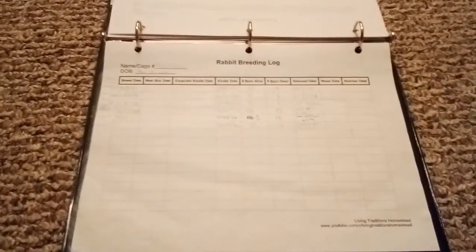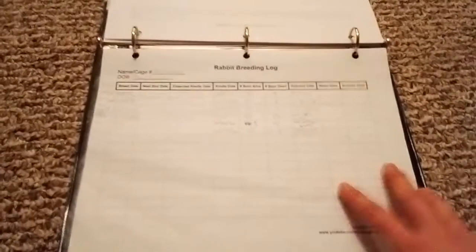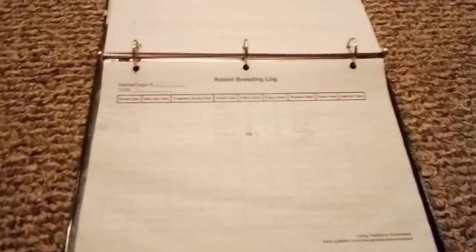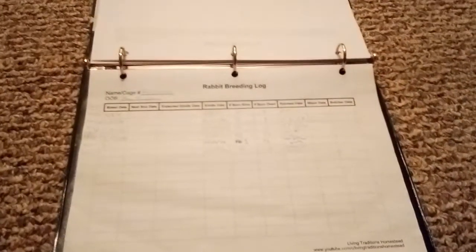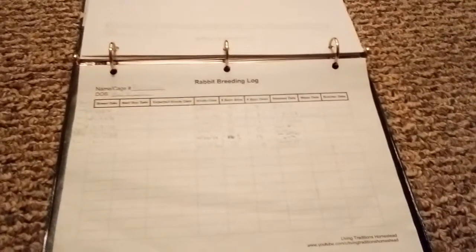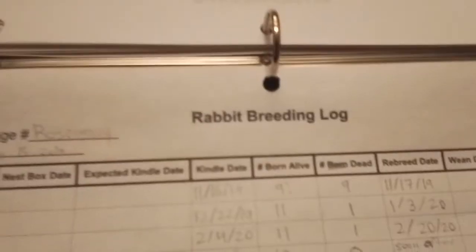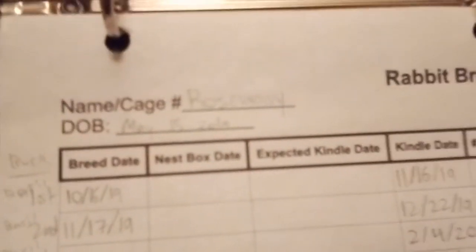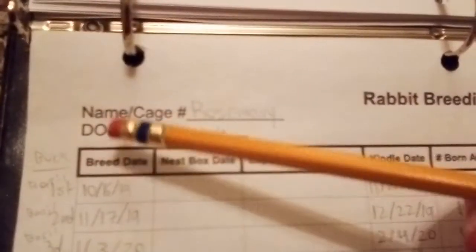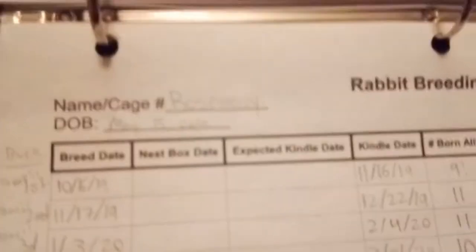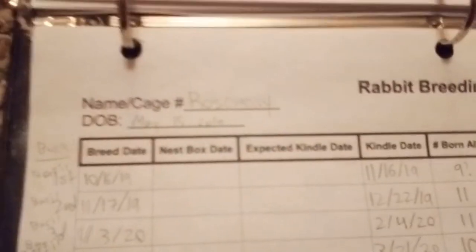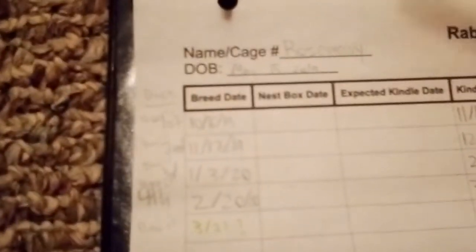I'm going to be using Rosemary's breeding log as an example. She passed away but we've kept two of her daughters, Peppermint and Henwen, so she'll be a great example. At the top of the page we have the rabbit breeding log printed there, then we have the name or cage number, and I wrote Rosemary.